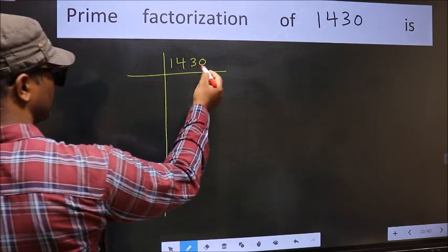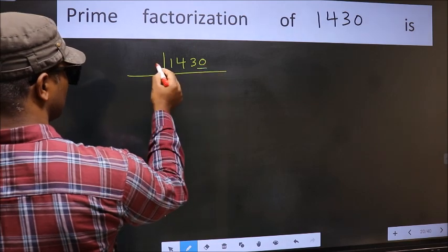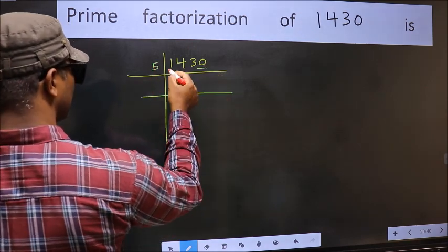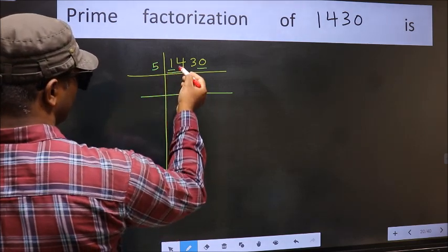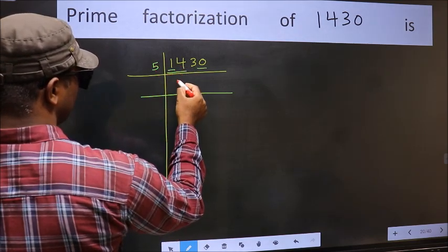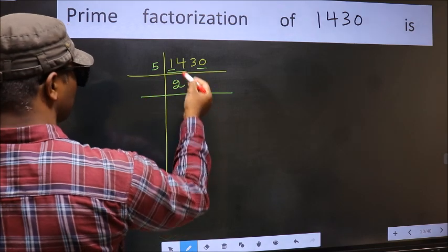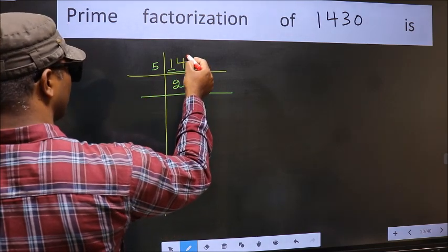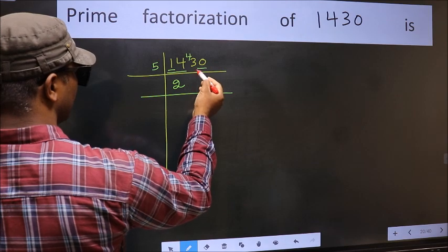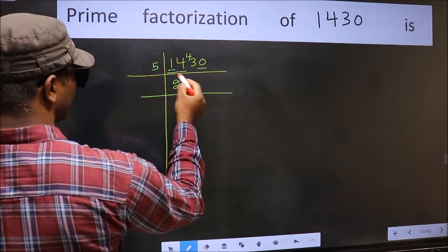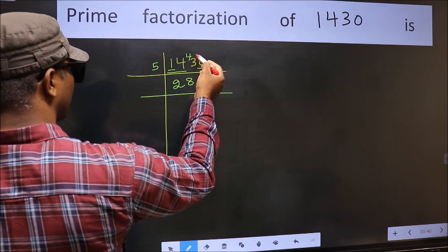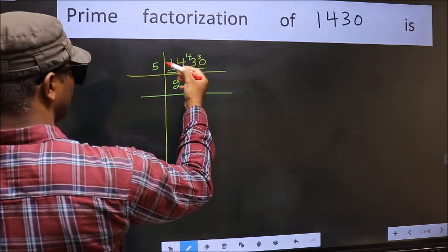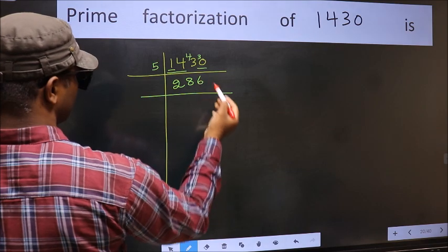In this number, the last digit is 0, so take 5. First number 1 is smaller than 5, so take 2 numbers: 14. A number close to 14 in 5 table is 5×2=10. 14-10=4, carried forward 43. A number close to 43 in 5 table is 5×8=40. 43-40=3, carried forward 30. When do we get 30 in 5 table? 5×6=30.